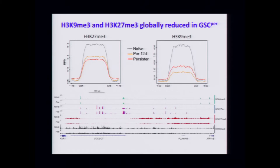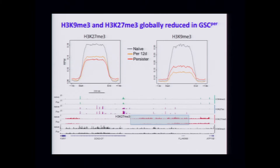There's another set — the KDM6 and KDM3 families that remove repressive marks — that seem more interesting. If you look at K27ME3 repressive polycomb peaks in the naive cells, you see pretty good signal, and then as cells transition into the drug-tolerant persister state there's a global erasure of K27ME3. You can see in the SOX2 locus there's pretty good signal for K27ME3 in the naive cells, and then it goes away in the persisters — but it's a very global effect. Similarly, K9ME3, another repressive mark, is also globally erased in the persisters.